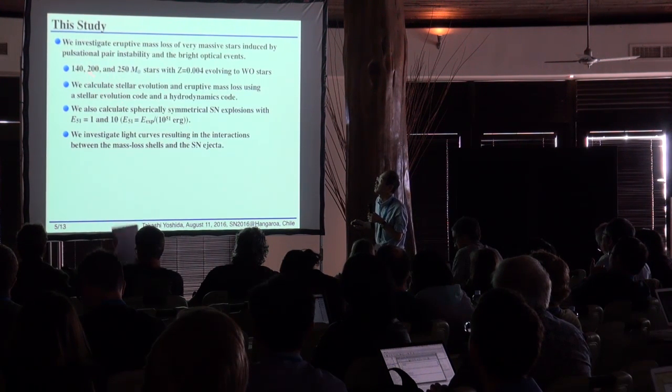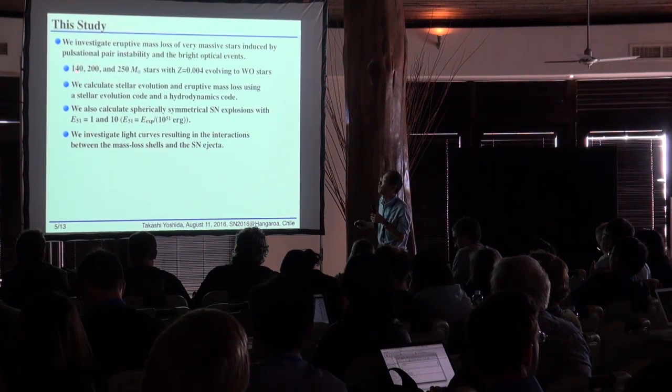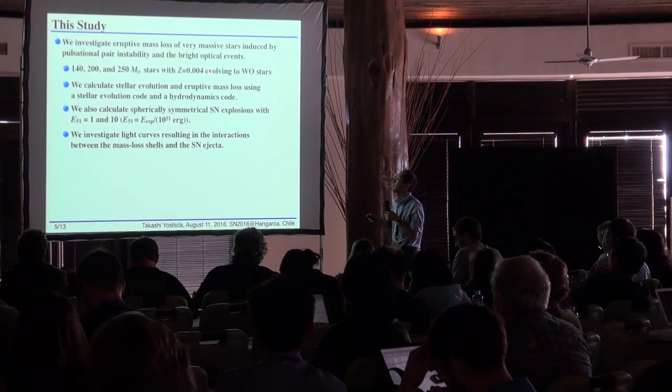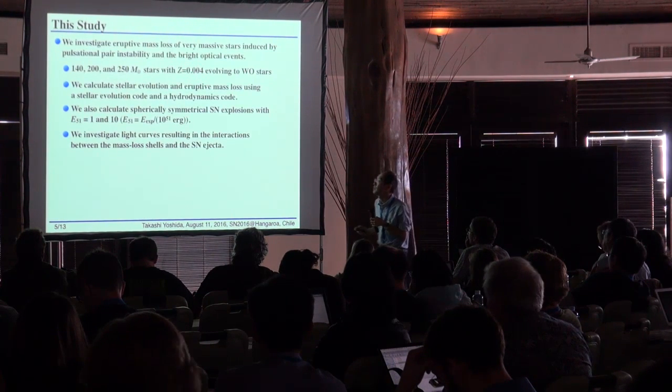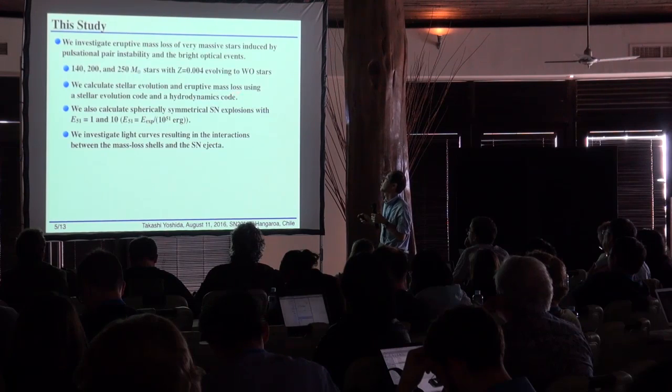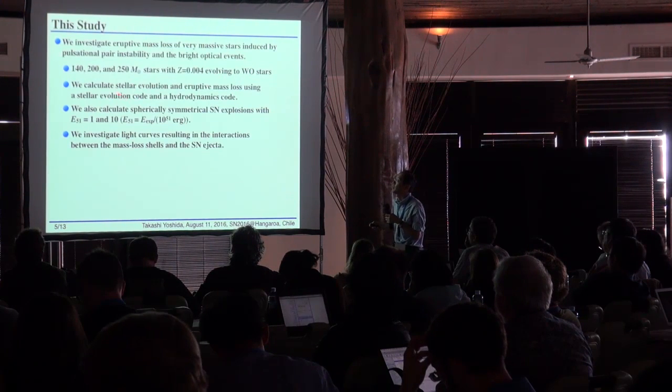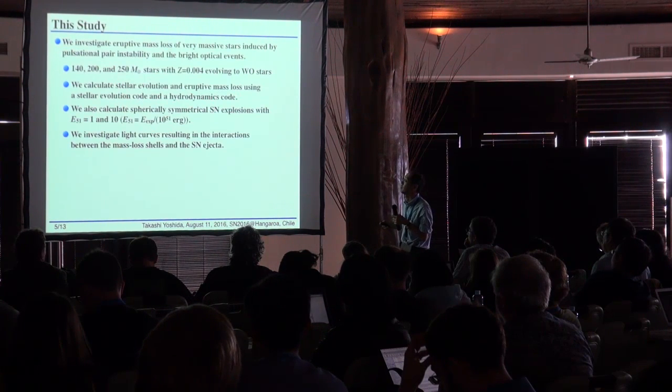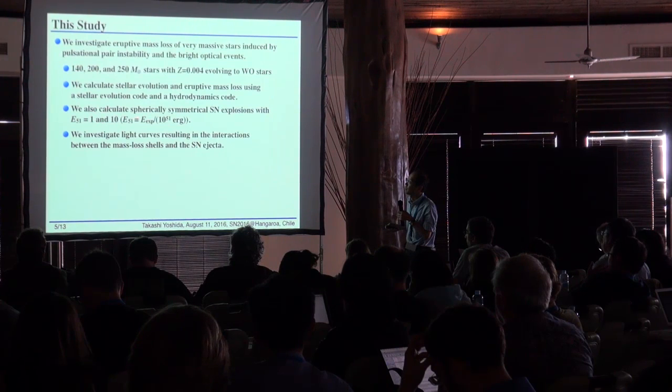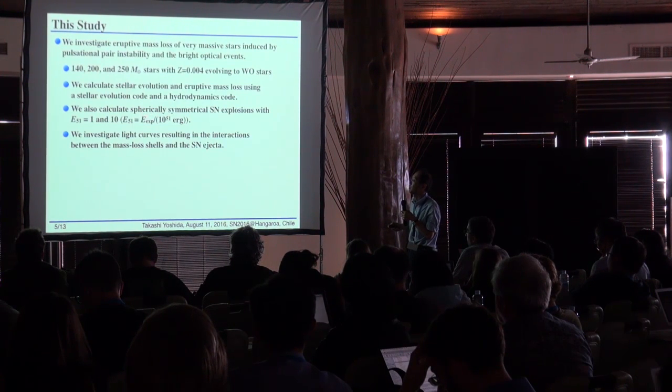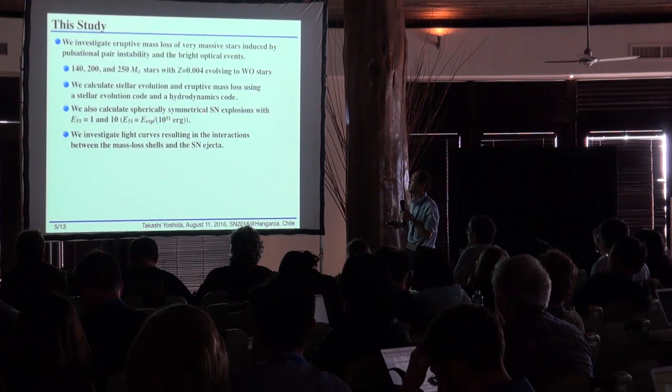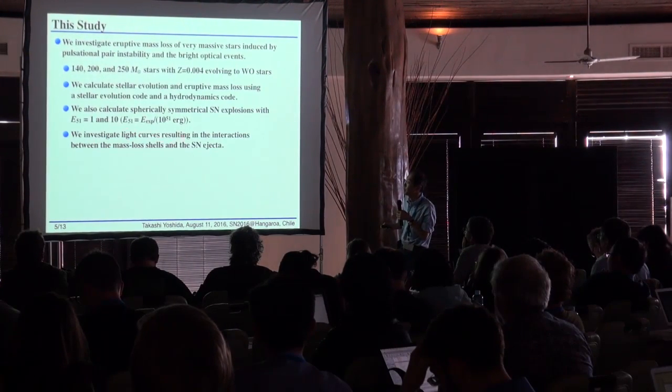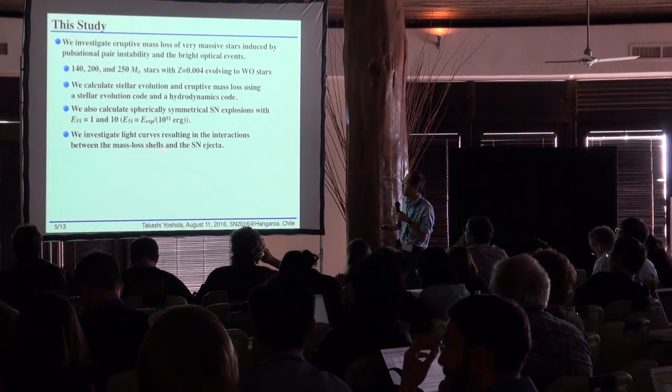We calculate three cases of stars: 140, 200, and 250 solar mass with metallicity around SMC. These stars are able to calculate stellar evolution including adaptive mass loss of hydrogen envelope. Then we also calculate systematic supernova explosions assuming spherical supernova explosions for simplicity. Finally, we investigate interactions between mass loss shells and supernova ejecta.